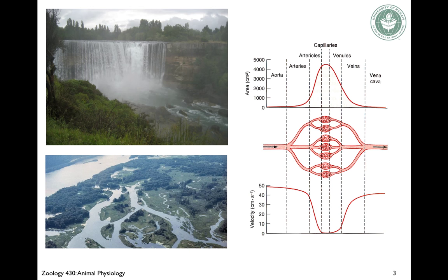That aspect is like your circulatory system: coming out of the heart in the aorta, blood is traveling at a very fast velocity through a small diameter, and as it branches over to the capillaries, the velocity is going very slow. Then as the vessels congeal again into the veins, the velocity goes back up — although slower — until it is finally returned back to the heart.